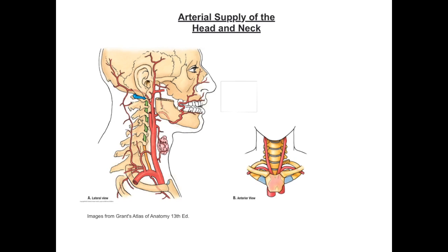There are a number of branches from the subclavian artery that are important for supplying structures in the head and neck. The first of these is the vertebral artery. This initially runs in front of the 7th cervical vertebra before entering a bony channel created by a series of transverse foramina, ascending up the neck through the cervical vertebrae, before running intracranially through the foramen magnum where it joins an anastomosis of arterial blood vessels, ultimately creating the circle of Willis.